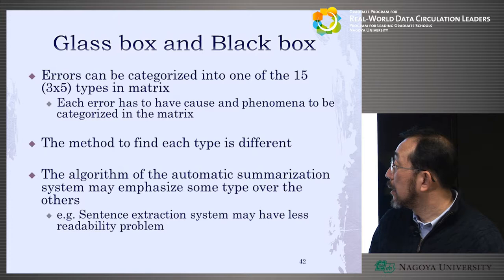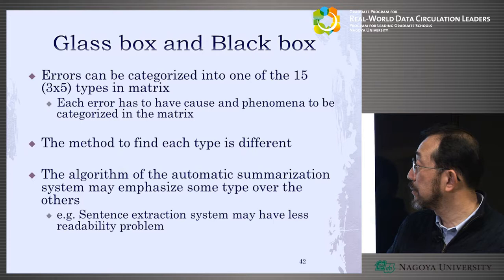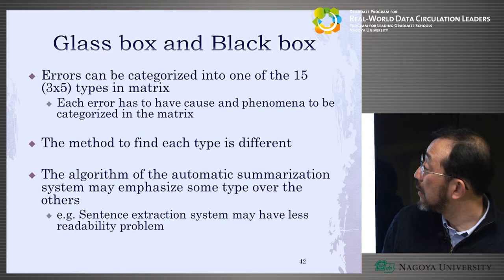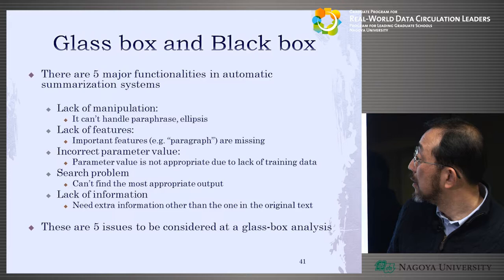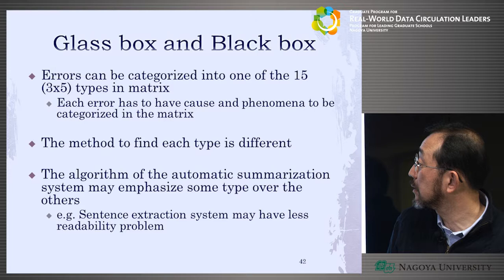An important finding in creating this matrix is that the method to find each type of error is different — different combinations of cause and phenomenon require different analysis approaches. That's something they found very nicely.